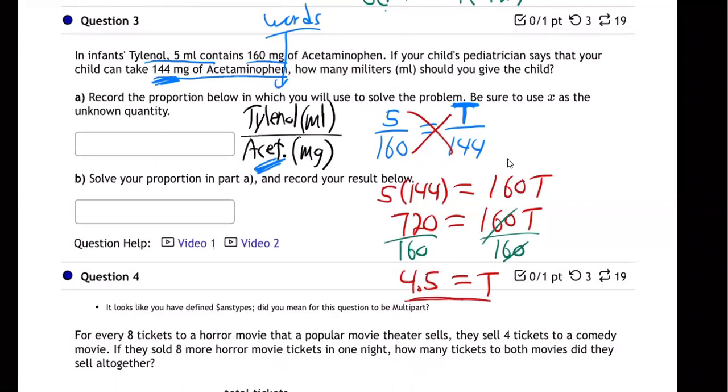So that's how much Tylenol, 4.5. So that's our answer right here. But what do they want in the first blank? They just want you to write the equation. They're just making sure you're writing out the equation.